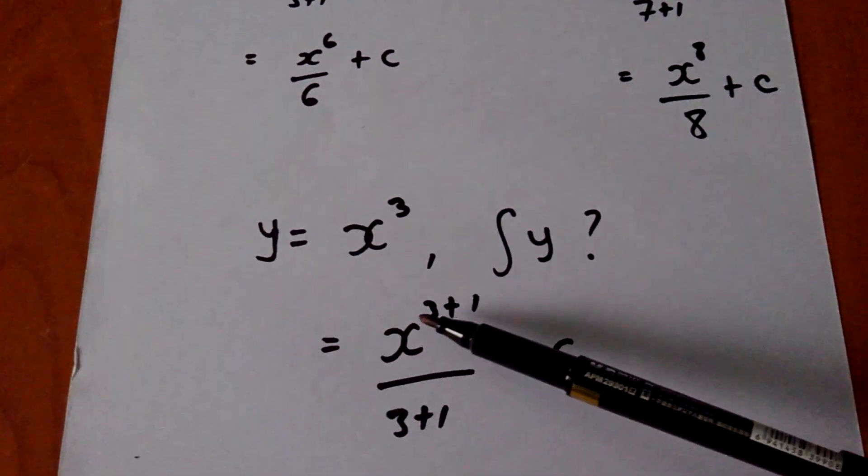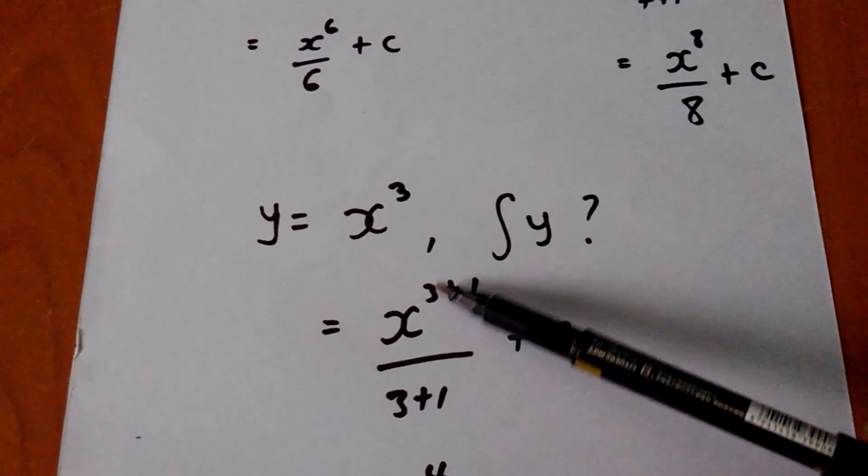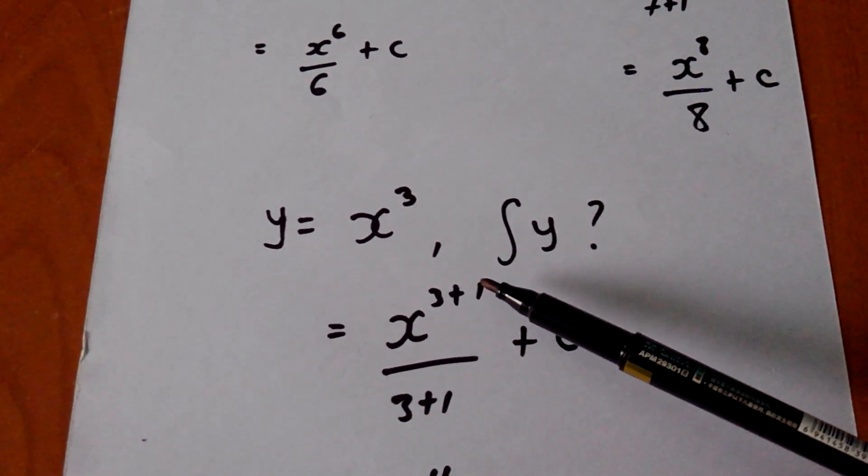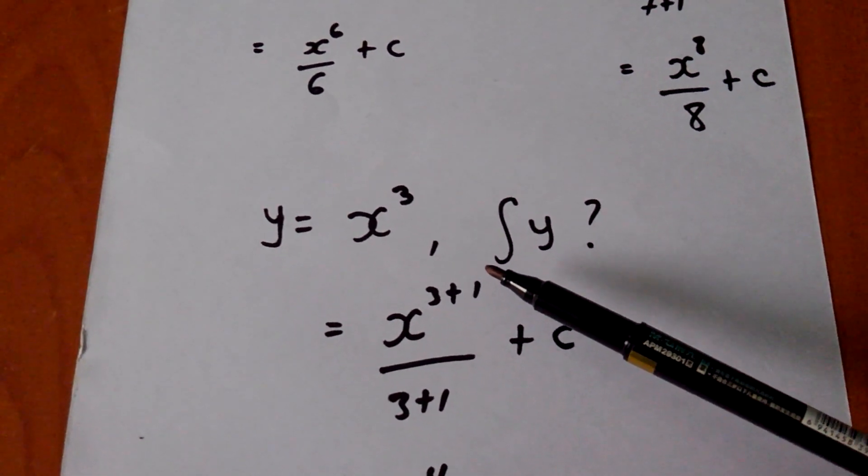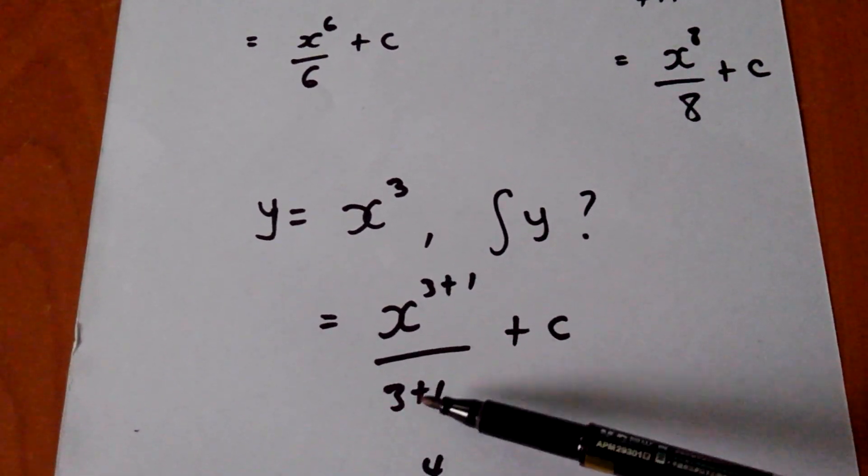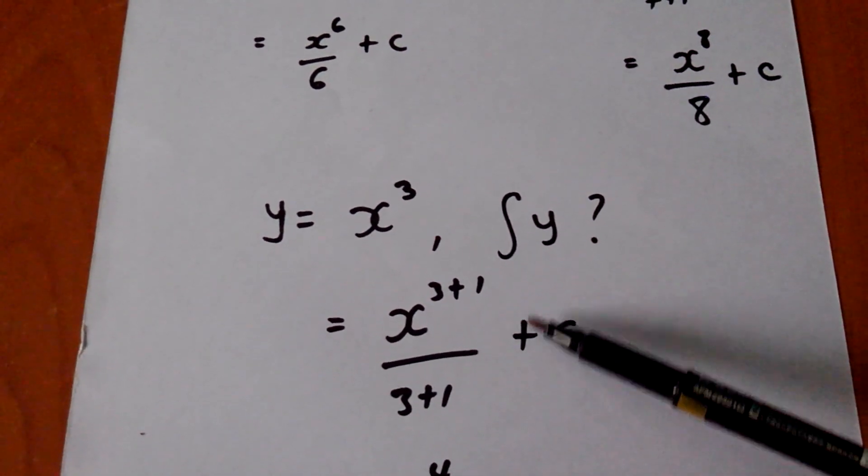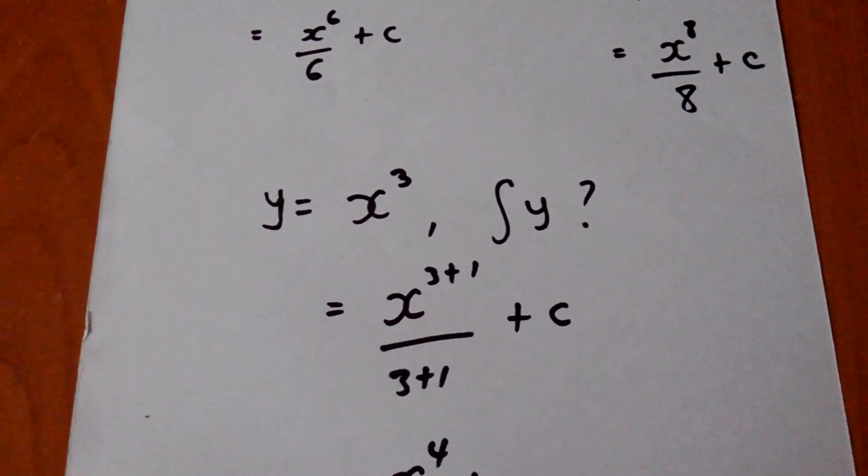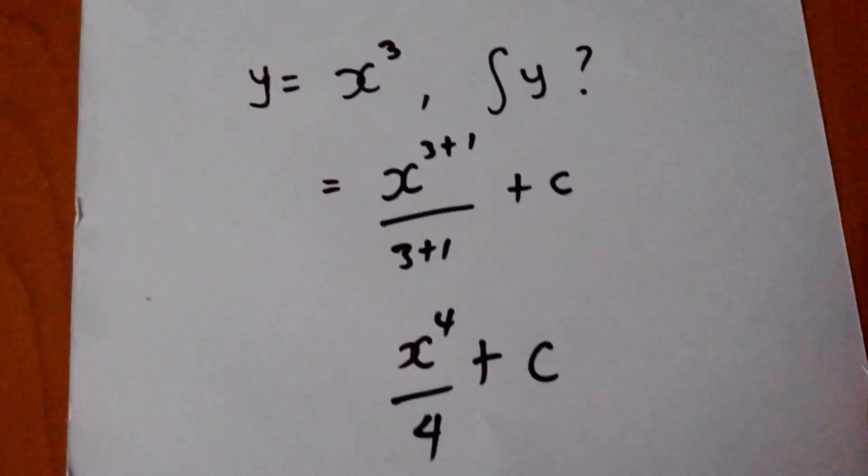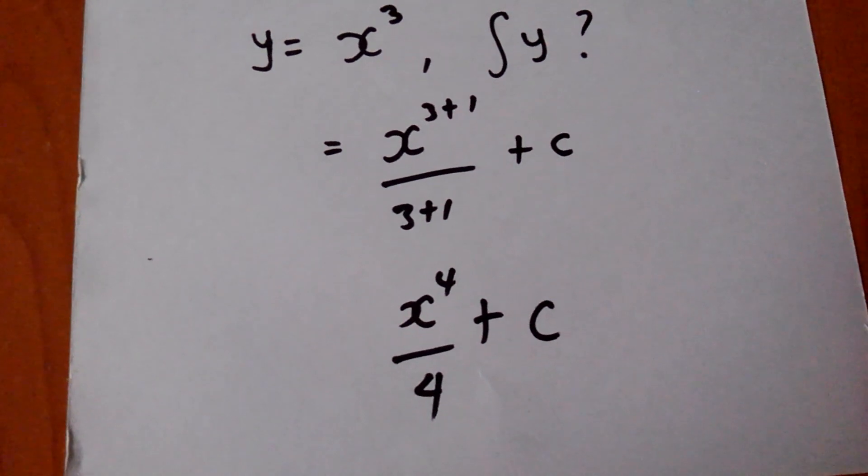I will bring my x, which I have. Then that power 3, I have to add 1 for me to get 4. So I will divide by the new power, which will be 3 plus 1, which is 4, then plus a constant. Please don't forget to put that constant. It is a must. You have to put that constant.